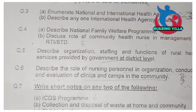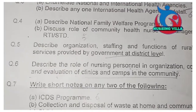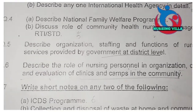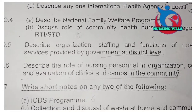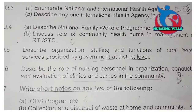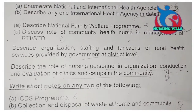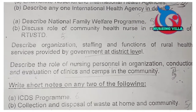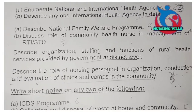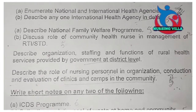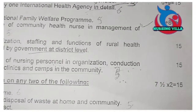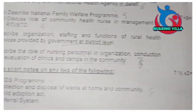Then we discuss question number 5. That is one question: describe organization, staffing, and functions of rural health services provided by the government at district level. It also has 15 marks.